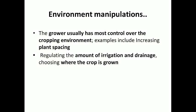In the case of environment manipulations, the grower usually has most control over the cropping environment. Examples include increasing plant spacing — by reducing humidity and decreasing the infection — then regulating the amount of irrigation and drainage, choosing where the crop is grown, that means choosing the climate, soil, nutrition, soil biodiversity, etc.